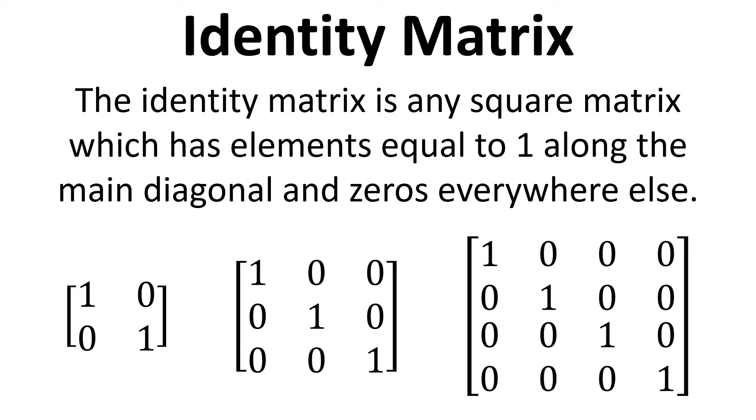You can also have a 2 by 2 identity matrix, a 4 by 4 and so on. But all the time it's always 1s along the main diagonal and 0s everywhere else.